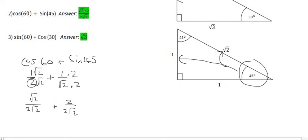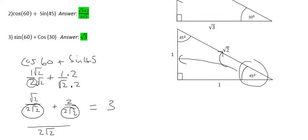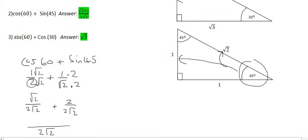Now that the denominators are the same we can put them together over one common denominator. You might ask: can't we just ignore the denominators? No — you only do that if it was an equation with an equal sign on the other side. When you're busy with a simplification, you're not going to ignore the denominators. So we end up with square root two plus two over two root two, and these two numbers cannot be combined. That is the final answer.